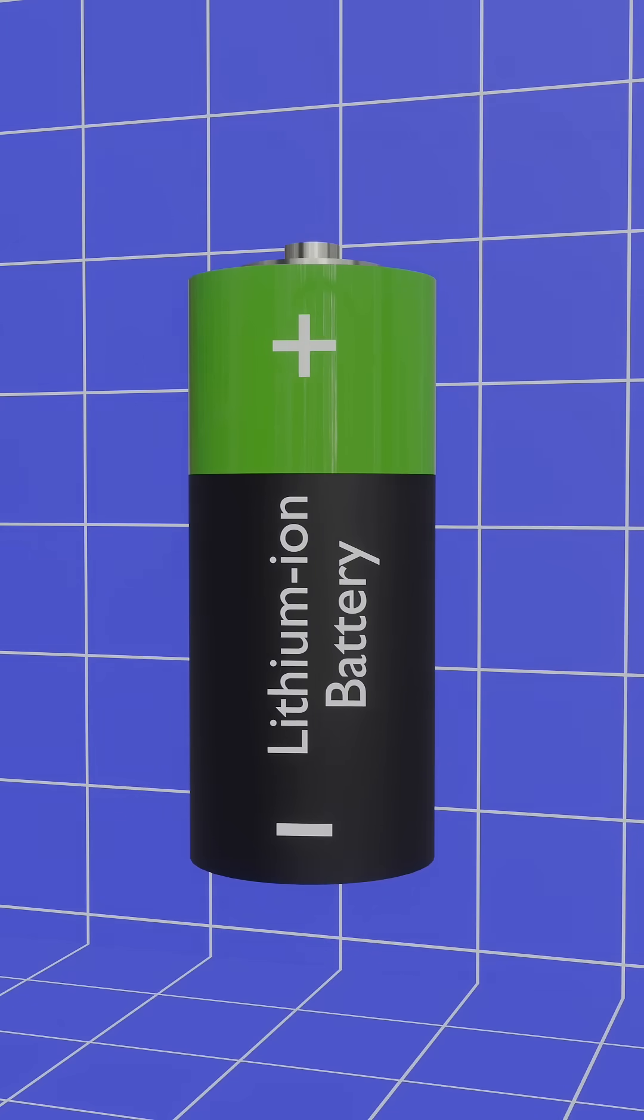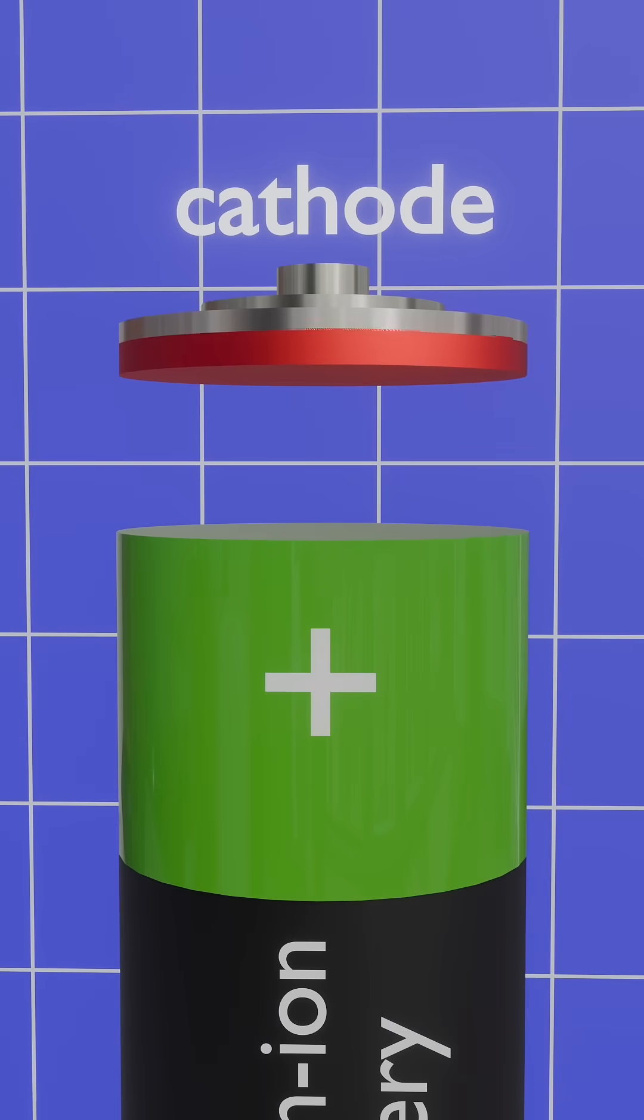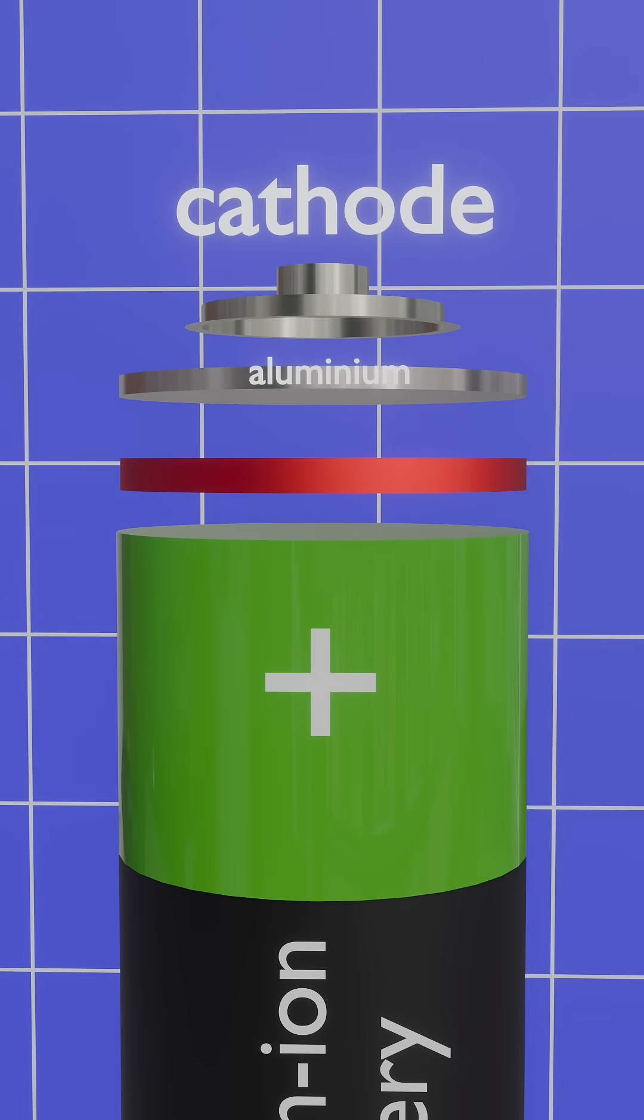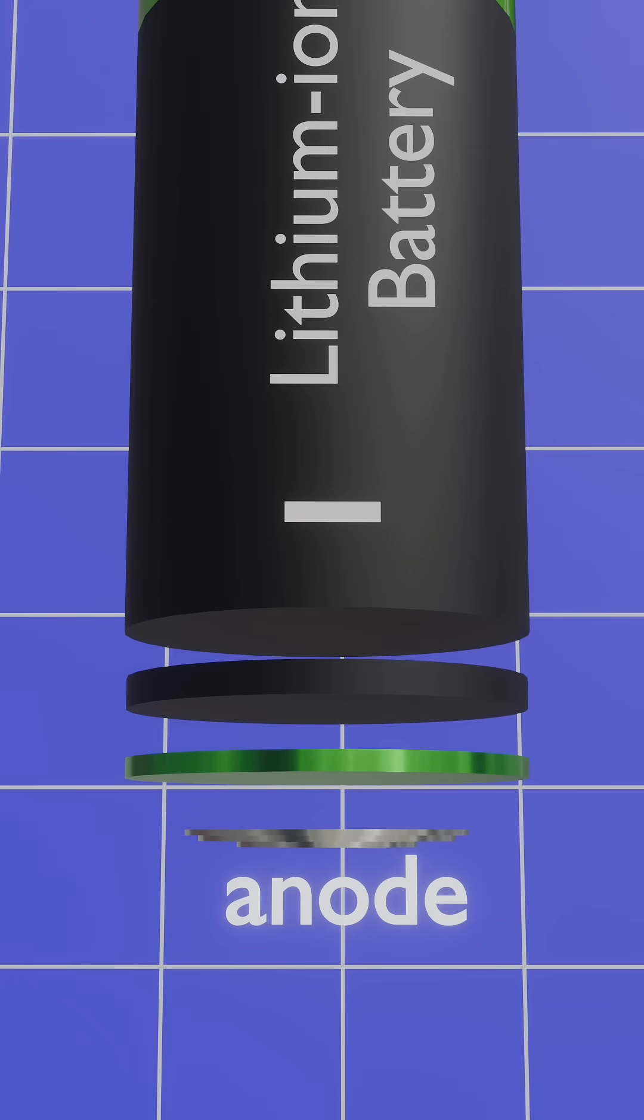This is a lithium-ion battery, which consists of two electrodes, the cathode, made of aluminum coated with lithium-ion phosphate, and the anode, made of copper, coated with graphite.